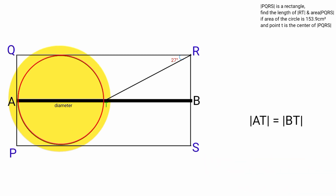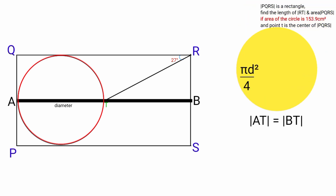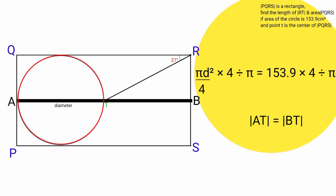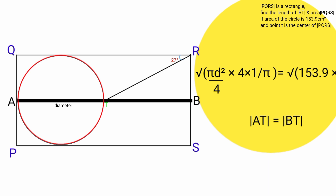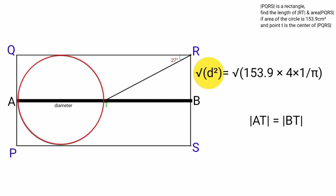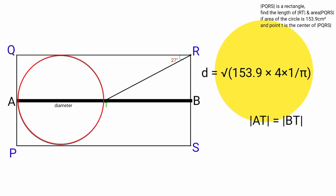The area of the circle is 153.9 cm squared. The formula for area in terms of diameter is pi D squared over 4. Setting pi D squared over 4 equal to 153.9 and solving: multiply both sides by 4, divide by pi, then take the square root. 153.9 times 4 divided by pi equals 195.9516, and the square root is approximately 14. So the diameter equals 14 cm, meaning line AT equals 14 cm.